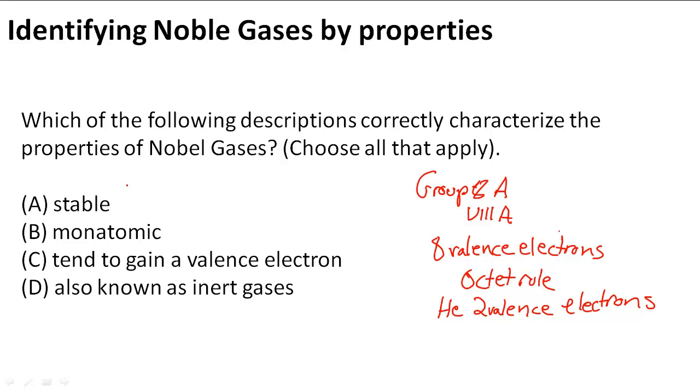So here we're going to check this out. It says A is stable. That's true because it has the 8 valence electrons that we're looking for.